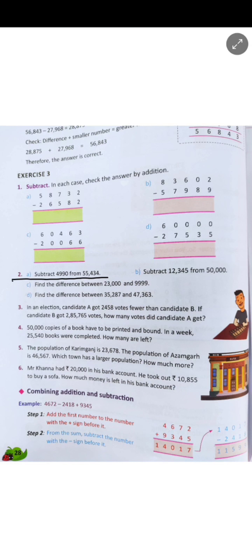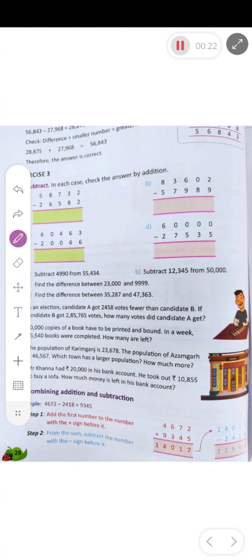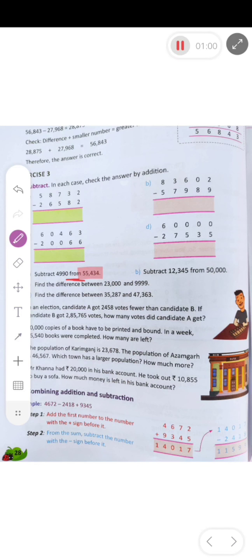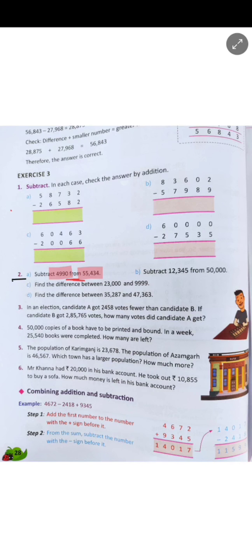Whenever you get such questions, you have to keep in mind that whatever is written after the word 'from' is to be your minuend. Here, 55,434 is written after 'from', so that is your minuend. You will write it on top and subtract 4,990 from that number. That means 4,990 is your subtrahend.